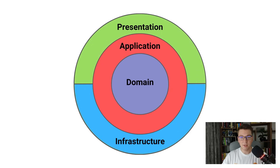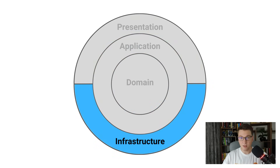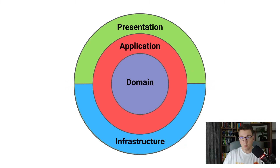I'm going to do a quick recap of the clean architecture. Here you can see the diagram of the clean architecture and notice that it has four distinct parts — these are called layers. We have the domain layer, the application layer, the infrastructure layer, and the presentation layer. In this video I'm going to focus on the domain layer.